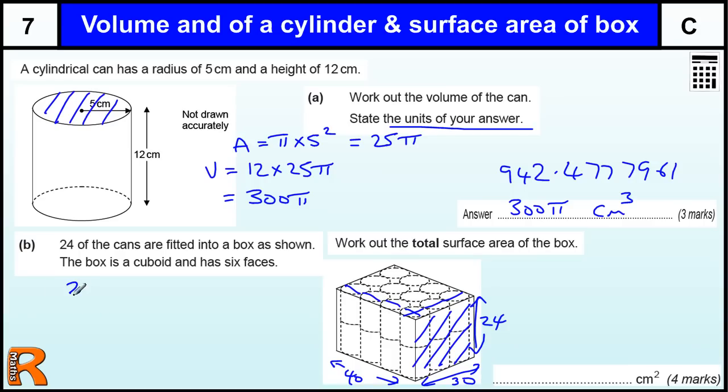So we have got, if we do the front side, 30 times 24, times that by 2. And if we do this side, that is going to be 40 times by 24, times that by 2. And then the top is going to be 40 by 30 and times that by 2. And work those out.